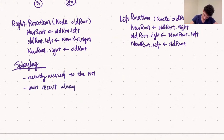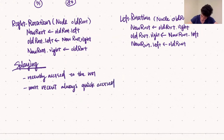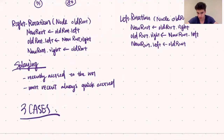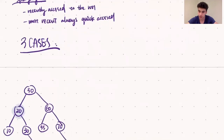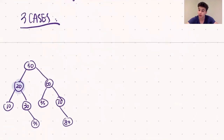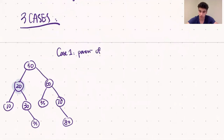In order to discuss how the splaying algorithm works, we generally break this down into three cases. Case one is the case where the root is the parent of the node we want to splay. We call this the zig case. In order to complete the zig case, we either have to do a left rotation or a right rotation of the root.